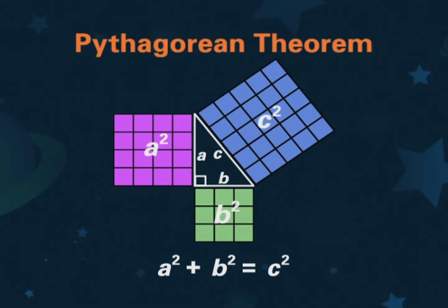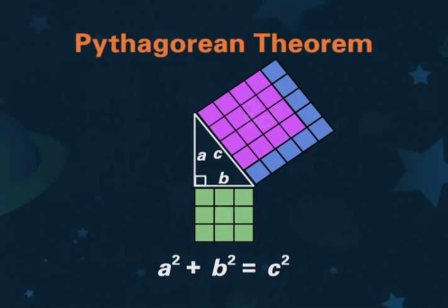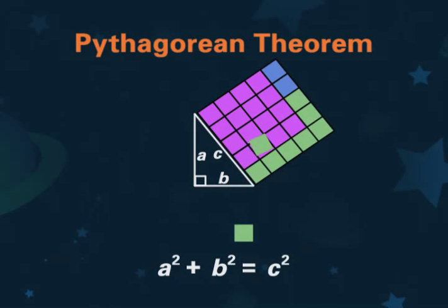Watch this. The area of A squared plus B squared has exactly the same area as C squared.